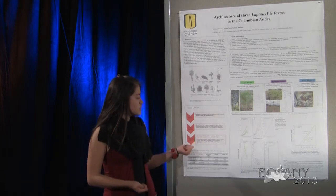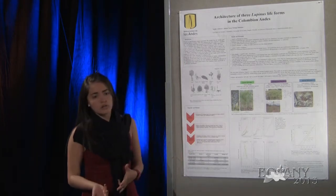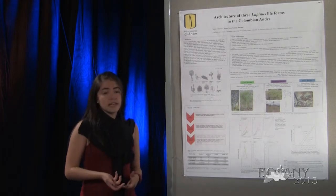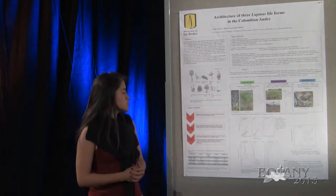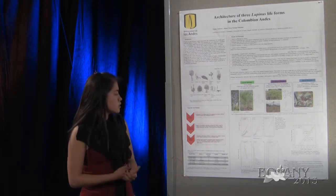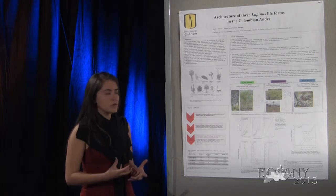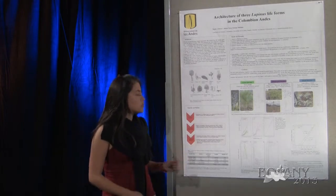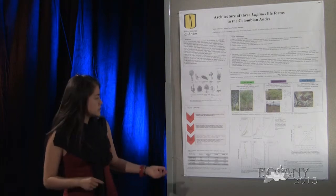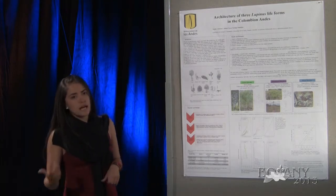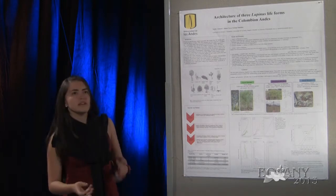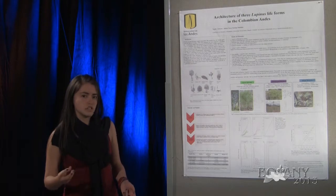The quantitative measurements were the number of nodes, the number of branches, the inter-node length, etc. The qualitative observations to determine the architectural model these growth forms are following were the monopodial or sympodial nature of the branches, the phyllotaxis or leaf arrangement, orthotropic or plagiotropic orientation, the branching pattern, and finally the position of the inflorescence in each branch.